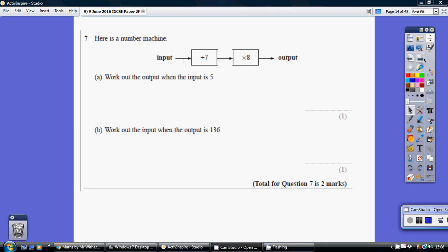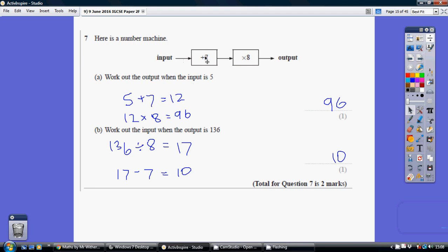So we take our 5, add 7 onto this which is 12, and then we multiply this by 8. 12 times 8 is 96.